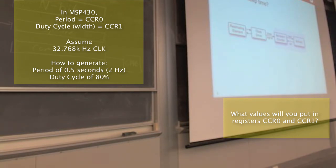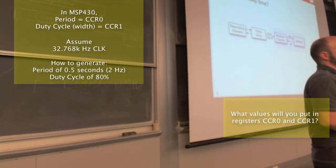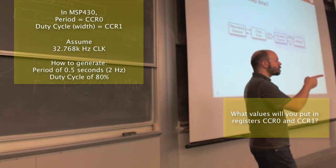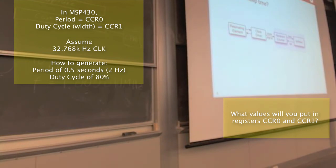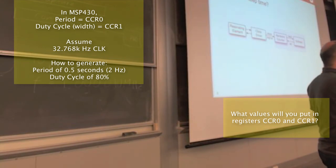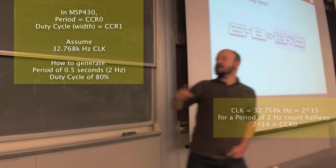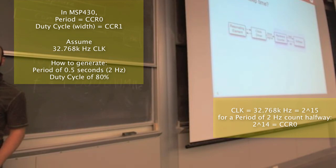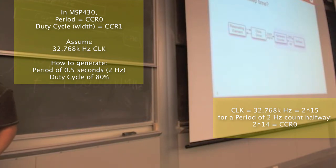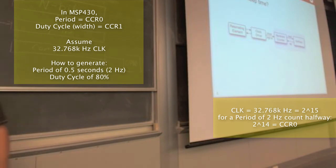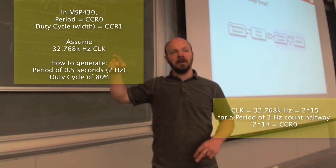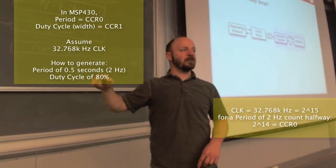To get to 2 Hz, you need half of 32.768 kHz ticks per cycle. 32.768 kHz is 2^15, so 2 Hz requires 2^14 counts — that's 16,384. You write 2^14 into CCR0, so the counter counts from 0 up to 2^14 and then resets to 0 again, giving you a period of 0.5 seconds.